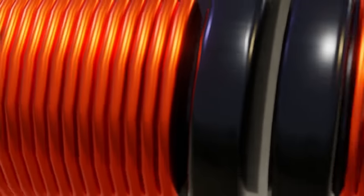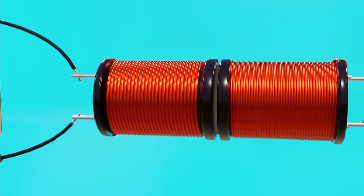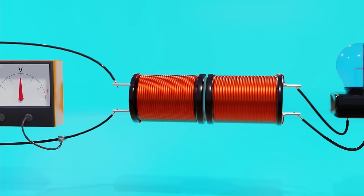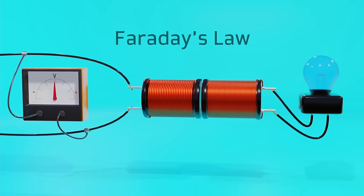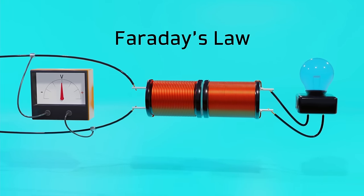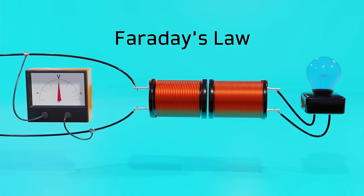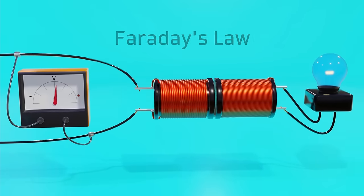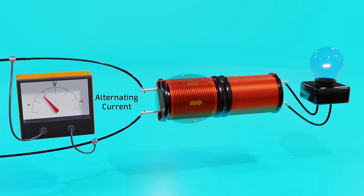First of all, we must understand why transformers work with alternating current and not with direct current. This occurs due to Faraday's law which in simple terms tells us that in order to induce a current in a conductor, the magnetic field must be changing over time, either increasing or decreasing.